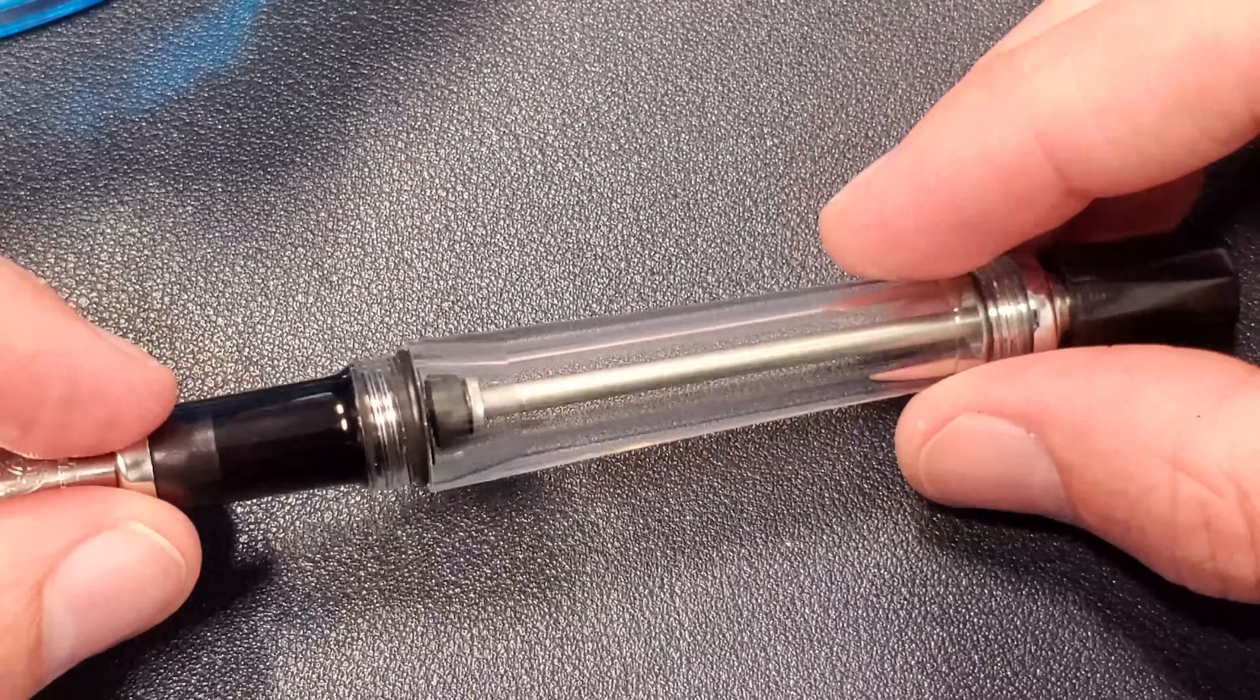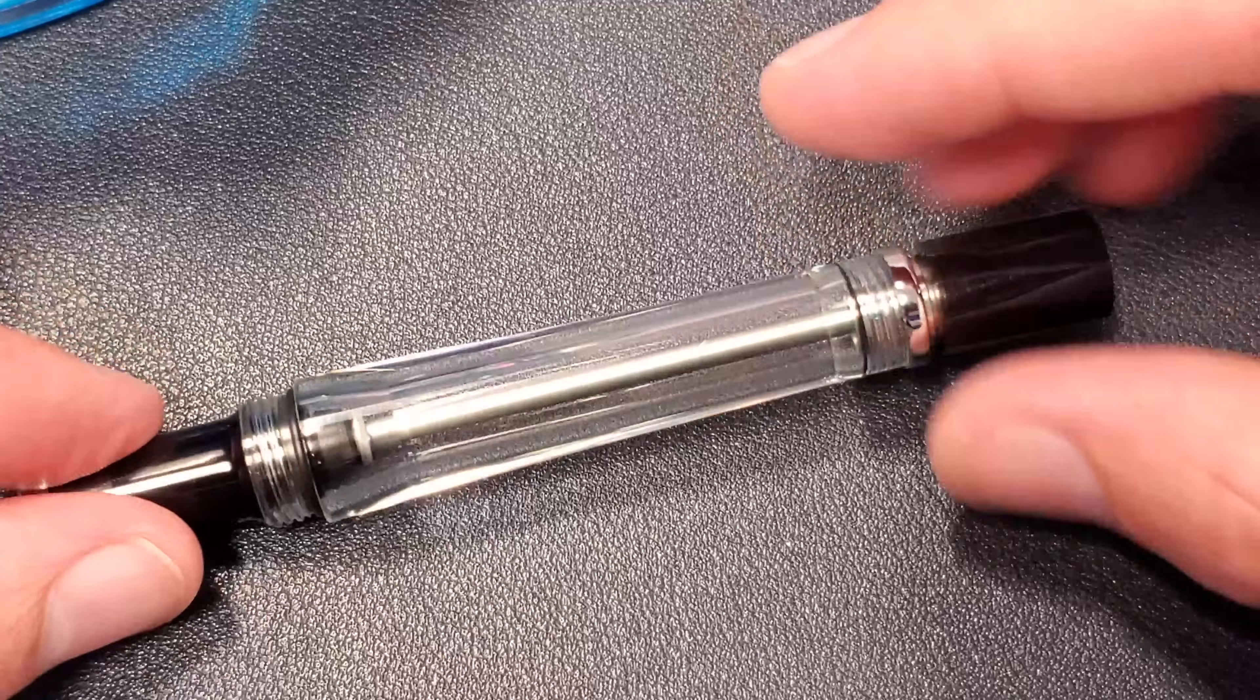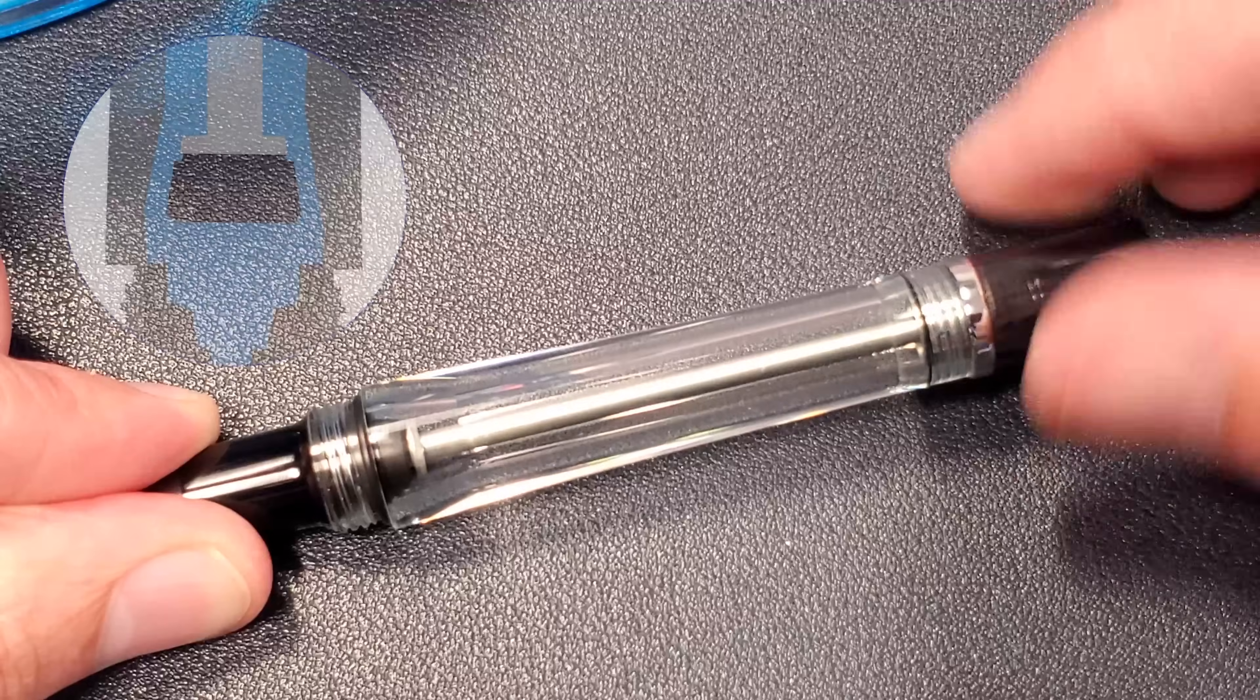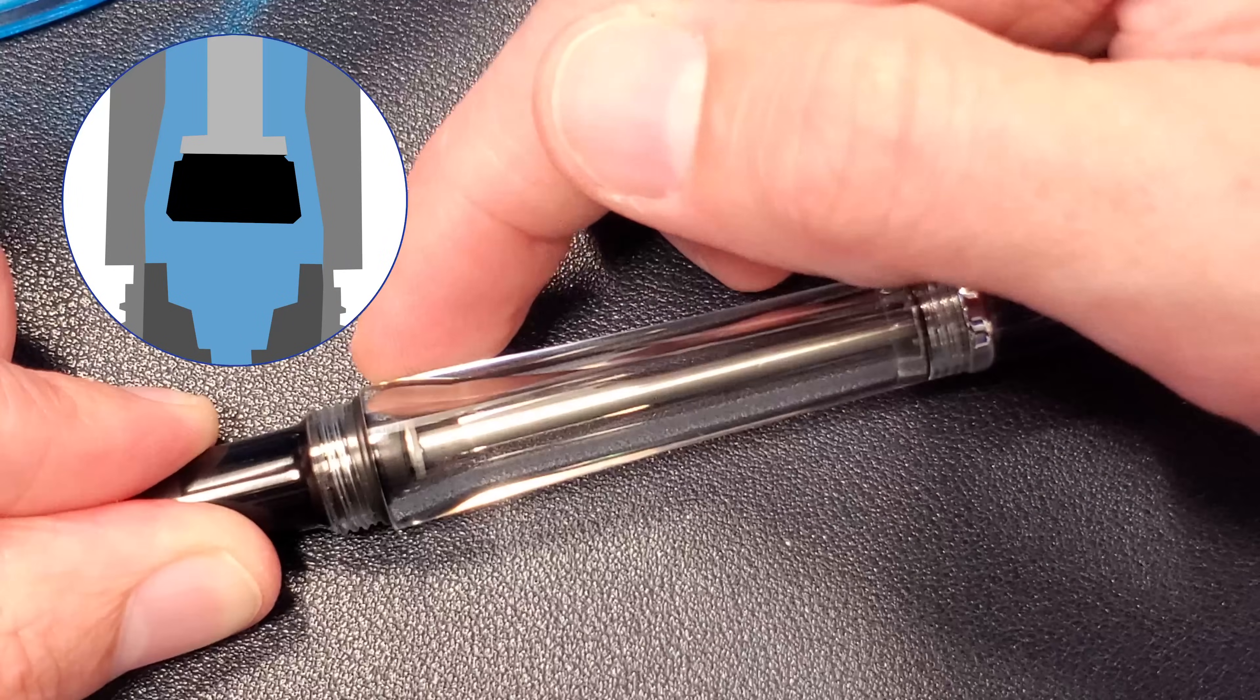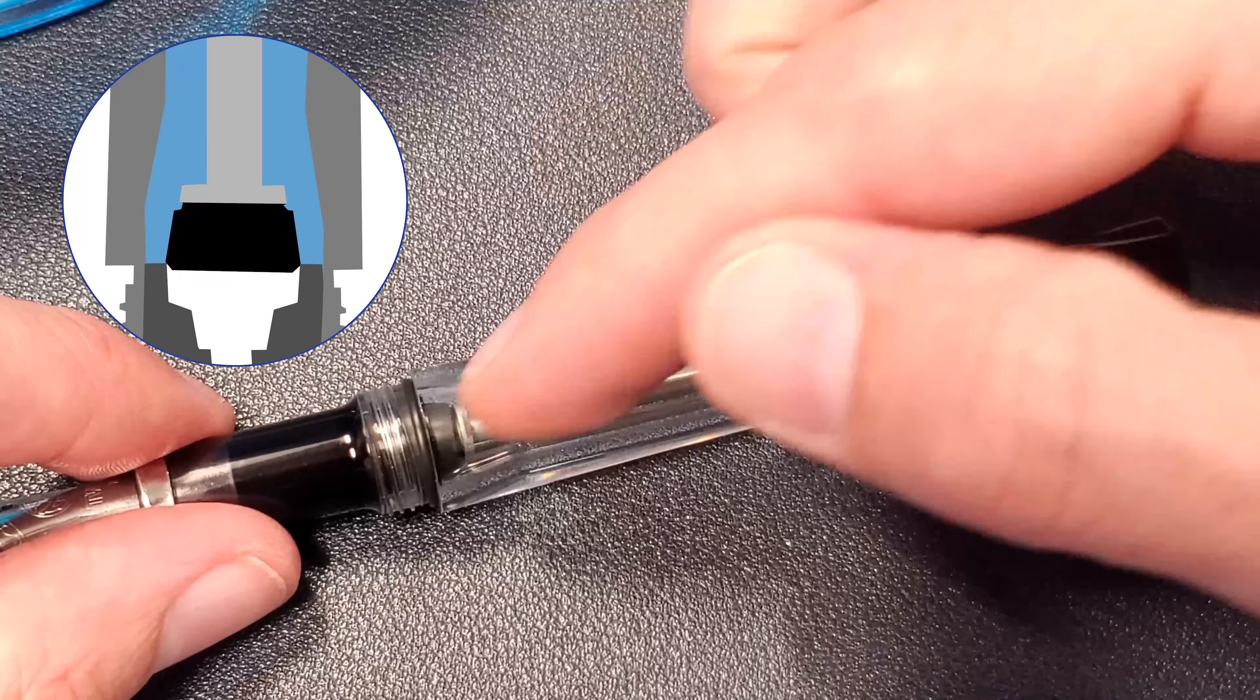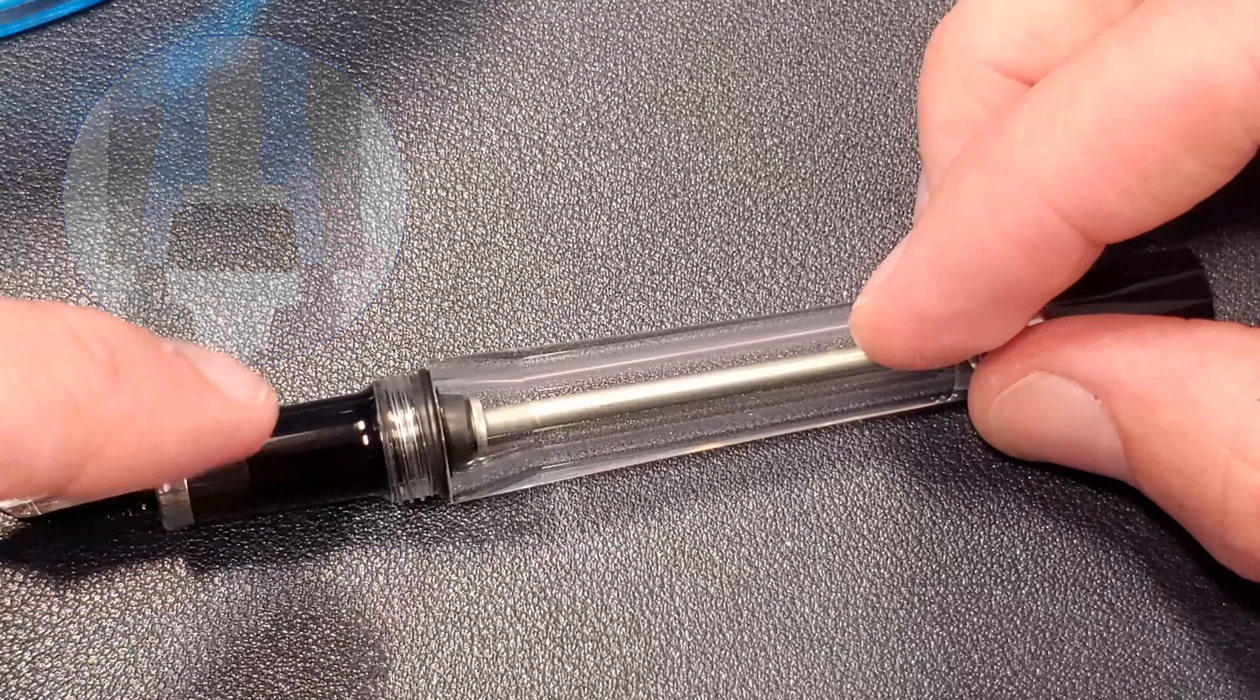So here's the not so secret thing about vac filling pens. When you tighten the knob all the way, keep an eye on this. Watch what happens. The gasket seals this part of the pen from this part of the pen, meaning all of the ink here cannot get here.